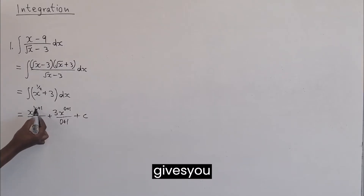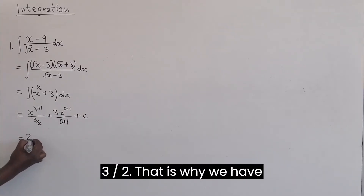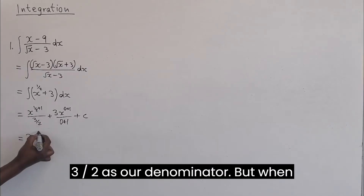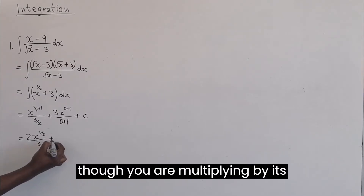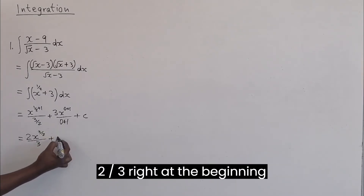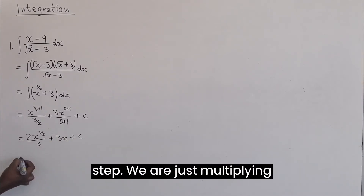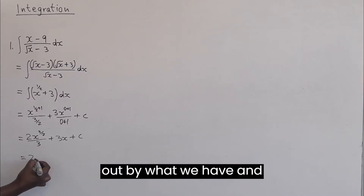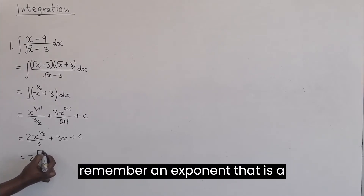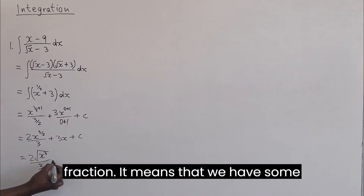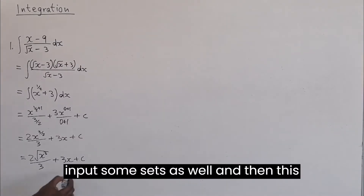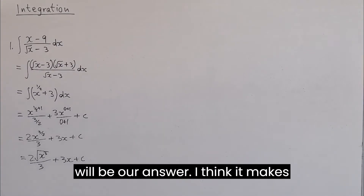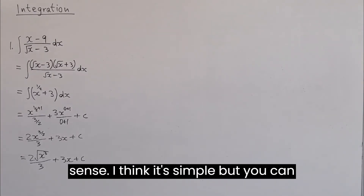A half plus one gives you three over two, which is why we have three over two as our denominator. But when you are dividing by a fraction, it is as though you are multiplying by its inverse — that is why you are seeing two over three at the beginning. We multiply out and remember an exponent that is a fraction means we have roots, so we write it using root notation. This gives us our answer.